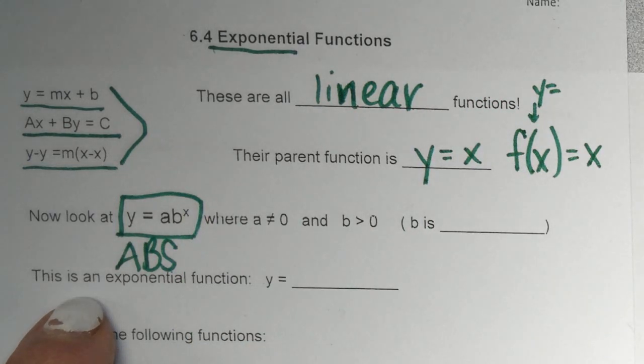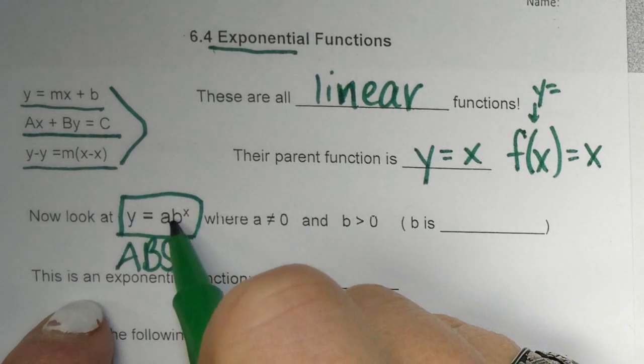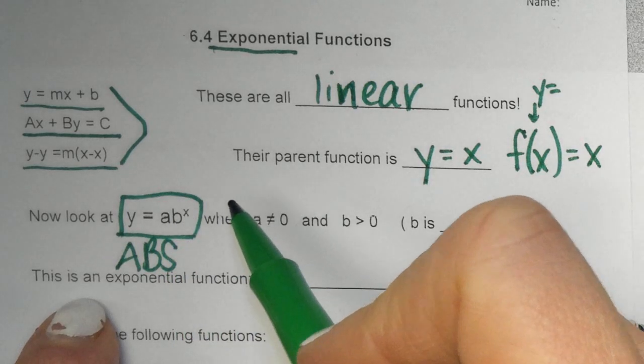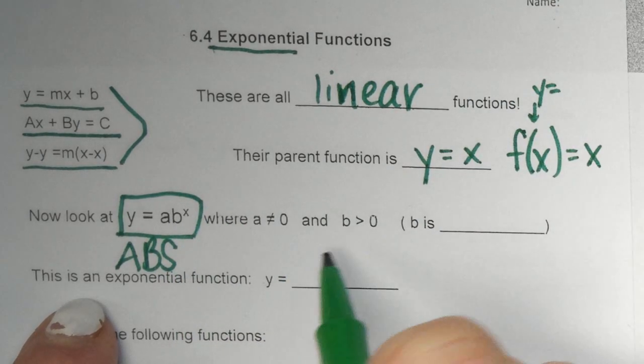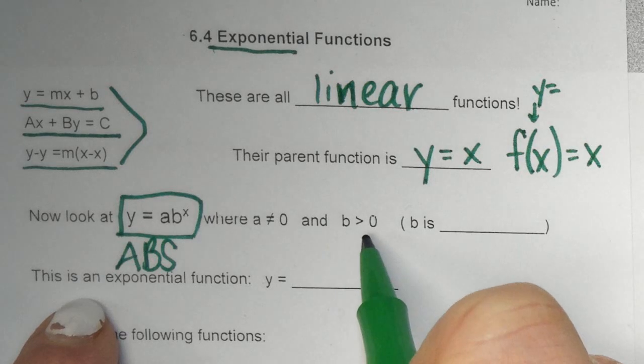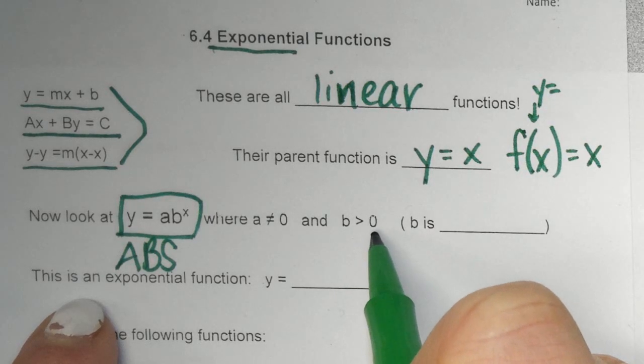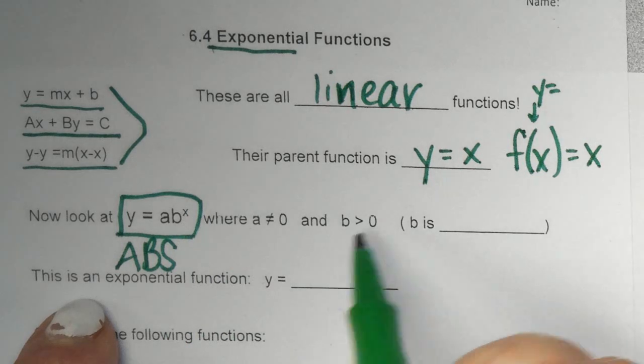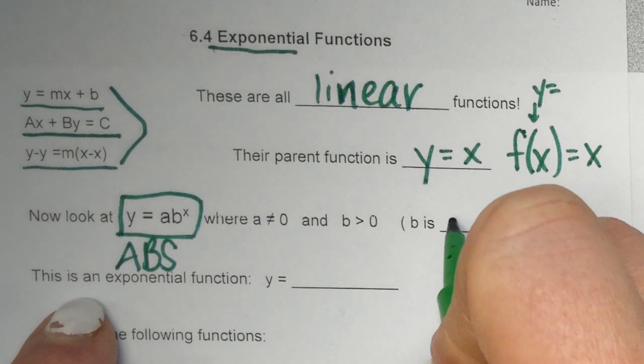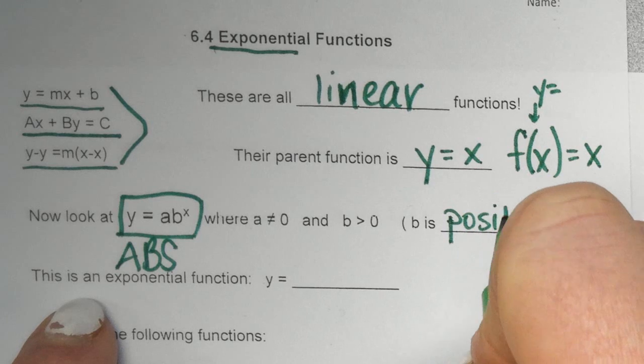And the number cannot be zero. Why can't that number be zero? Because if you have zero times anything, it's going to equal zero. And so then it would get rid of all the rest of it. Also, b has to be greater than zero. B has to be greater than zero. Because zero to any power is just going to be zero. So it needs to be greater than zero. Also, b has to be positive.